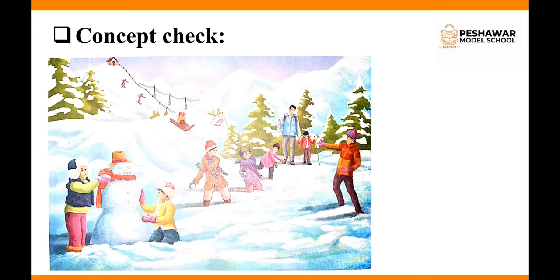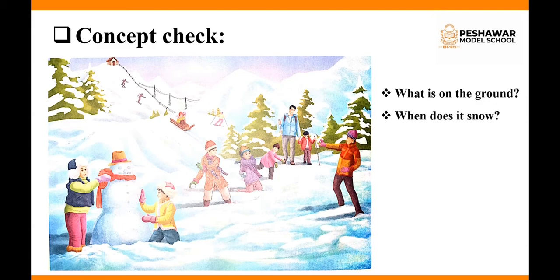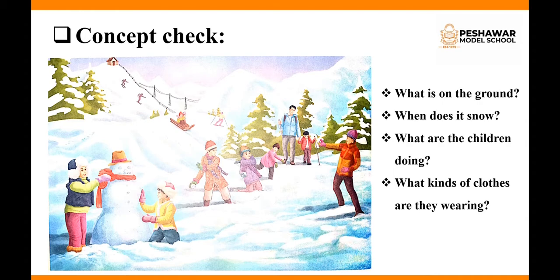This is a concept check. There are kids enjoying and playing. Question one: what is on the ground? The snow is on the ground. Question two: when does it snow? It snows in winter season. Question three: what are the children doing? The children are playing with the snow. Question four: what kind of clothes are they wearing? They are wearing warm clothes according to the weather so that they don't get cold.